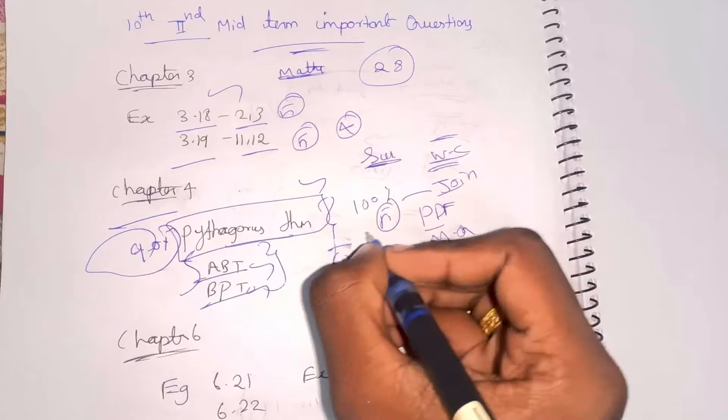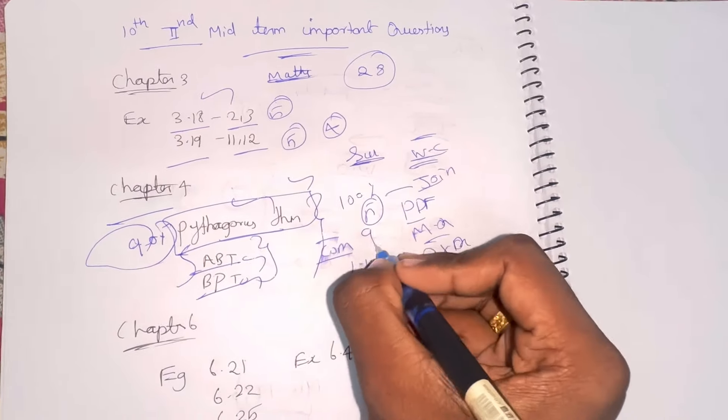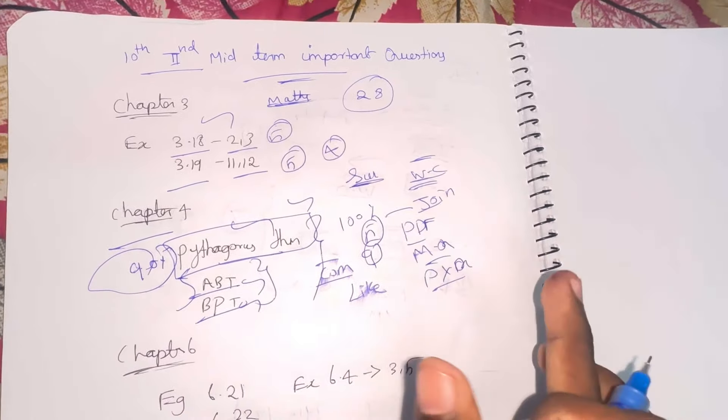Chapter 4 has 5 mark questions, and you will see Pythagoras theorem in the middle. 90% of the time it's Pythagoras theorem.